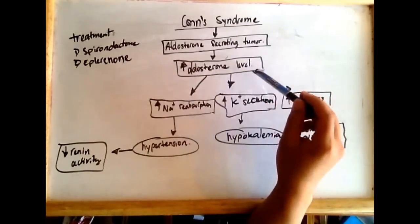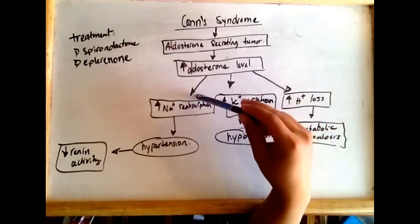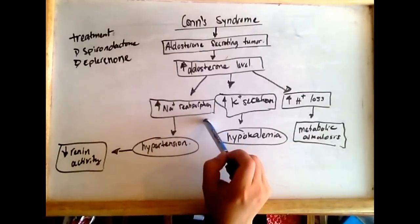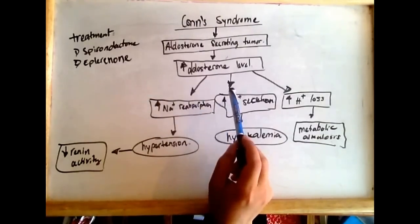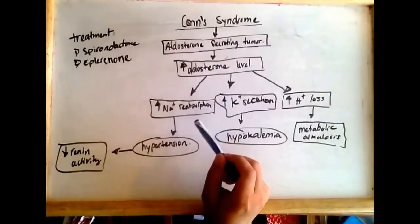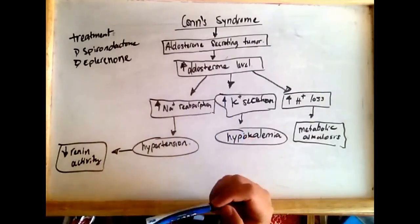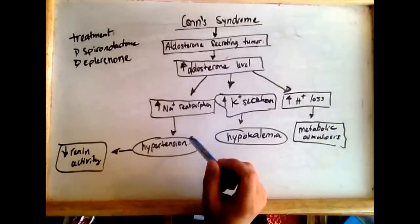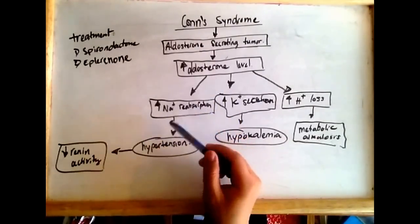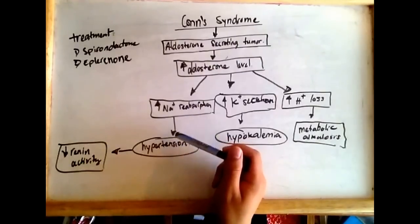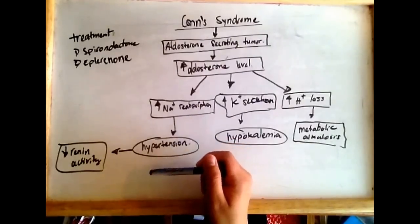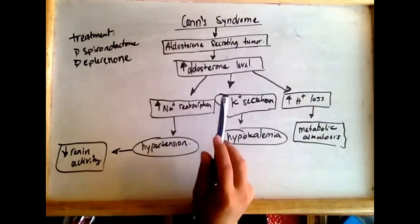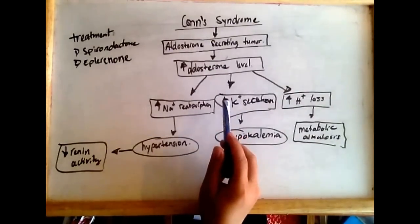What aldosterone does is go to the kidney and increase sodium reabsorption. It increases sodium and sodium chloride reabsorption, which leads to an increase in water reabsorption, because water will go wherever sodium goes. When you reabsorb more sodium, more water is reabsorbed into the blood, leading to hypertension due to hyperaldosteronism.